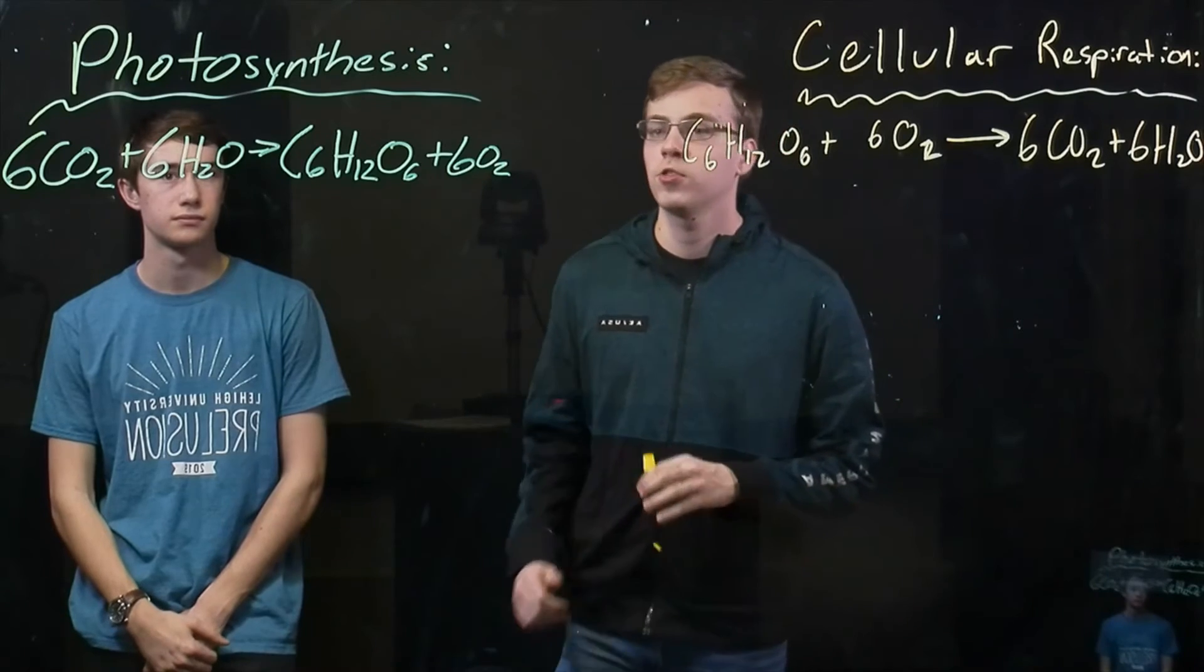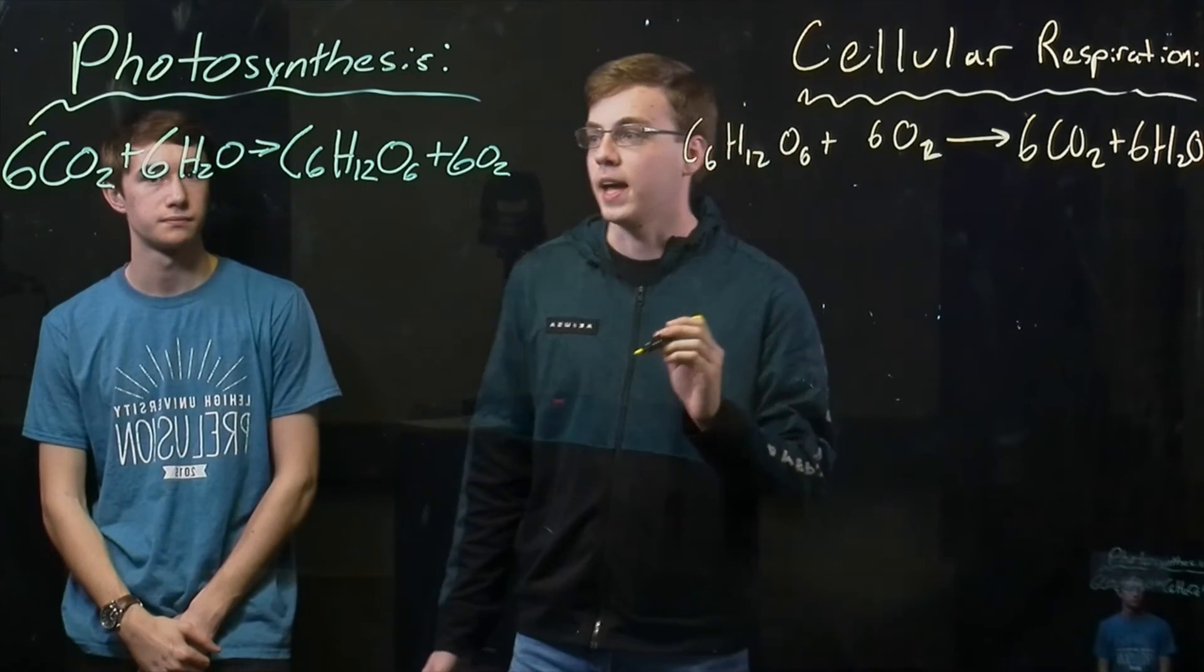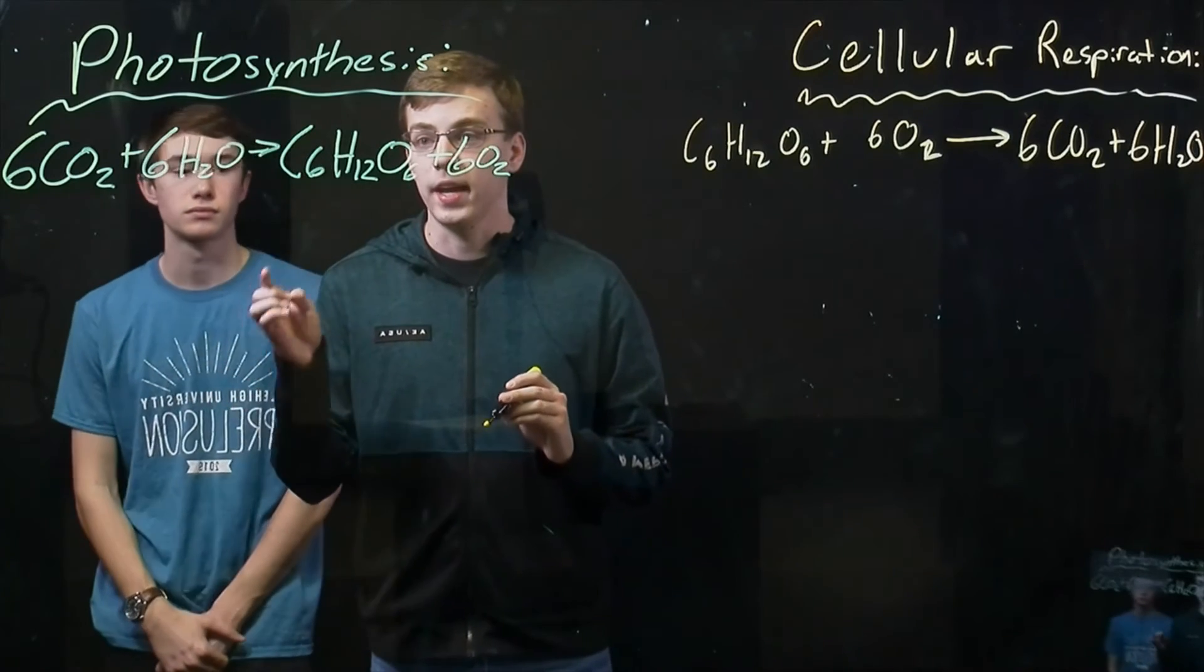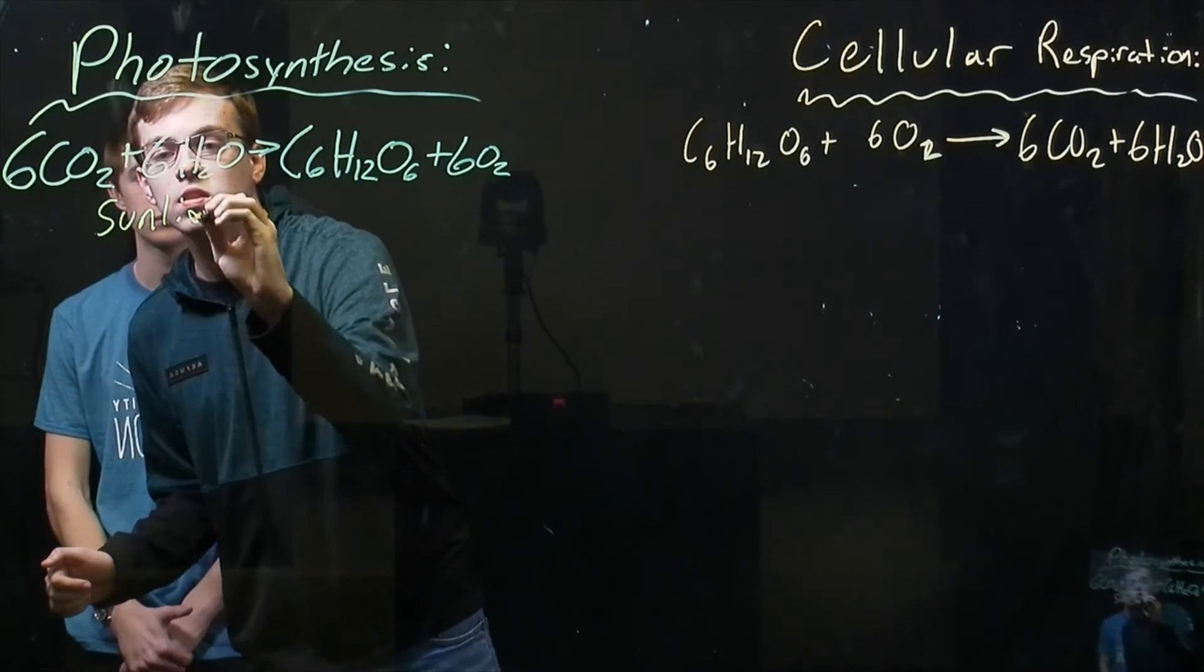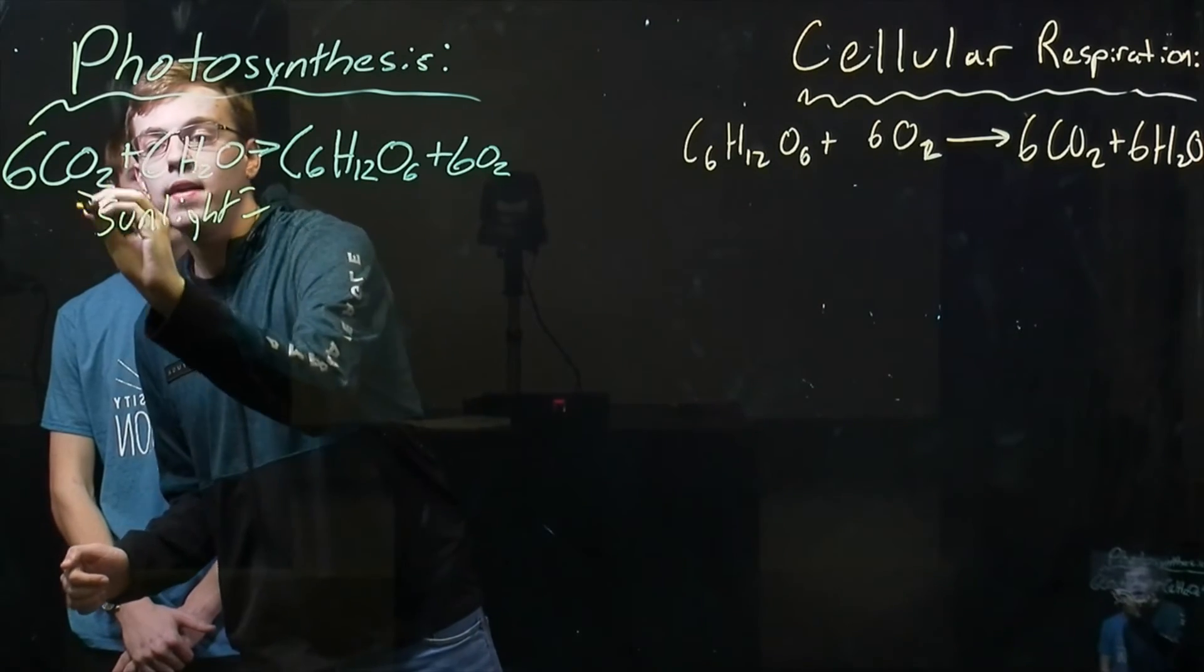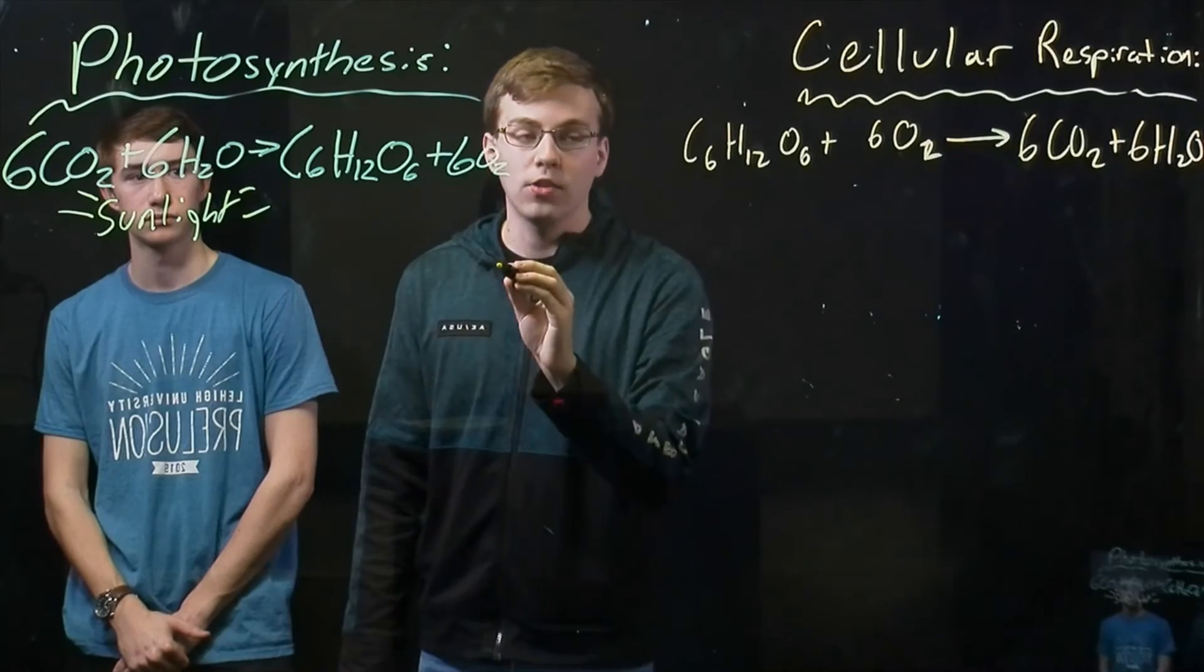Okay, so here we have our equations for photosynthesis and cellular respiration. So again, we have carbon dioxide and water and sunlight. It goes to the chloroplast to make glucose and oxygen gas.